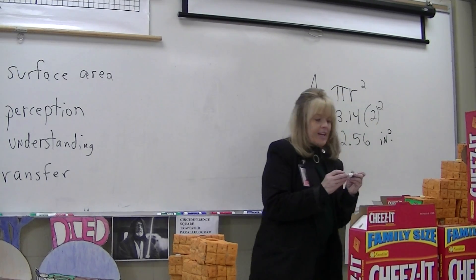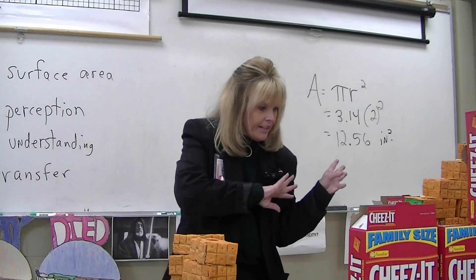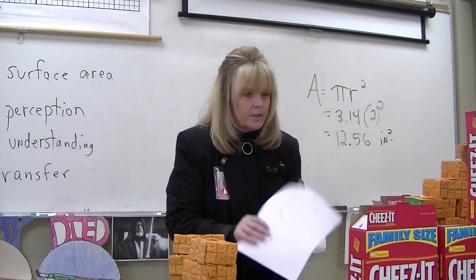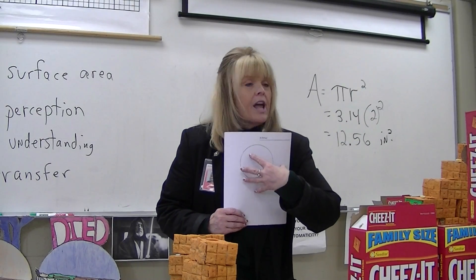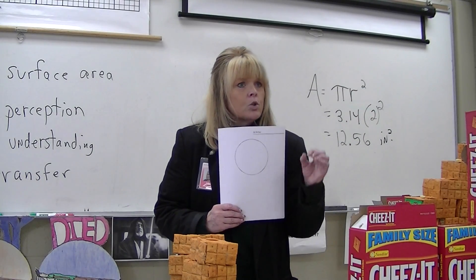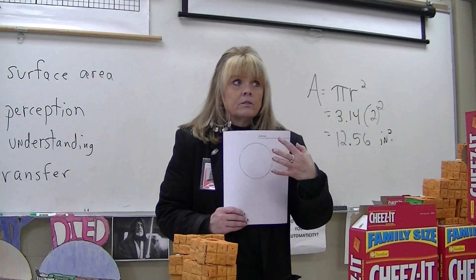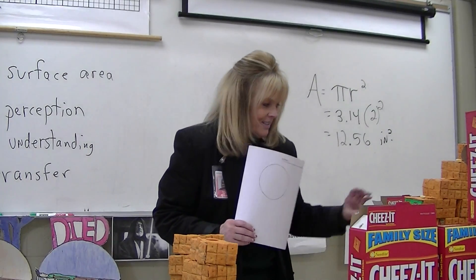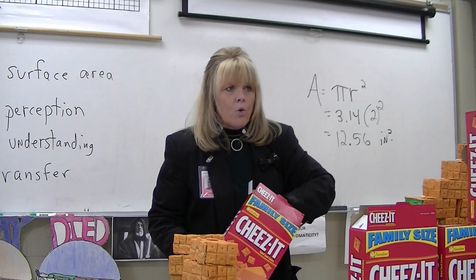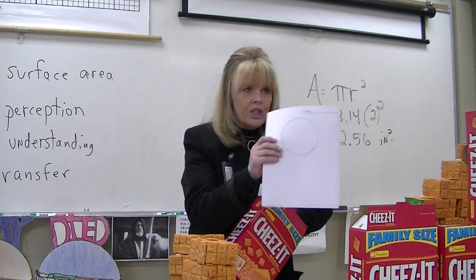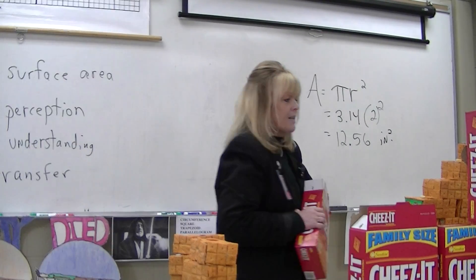The label is square inches because it's area — anytime you do area, the answer will be in square units. So I'm telling you the area of this circle is 12.56 square inches. I'm going to give you 12 Cheez-Its — because a Cheez-It is one square inch — and I want you to place the 12 Cheez-Its on your circle. Let's investigate and see what happens.